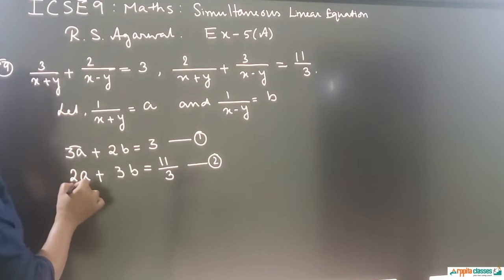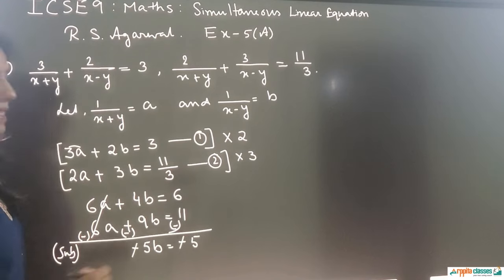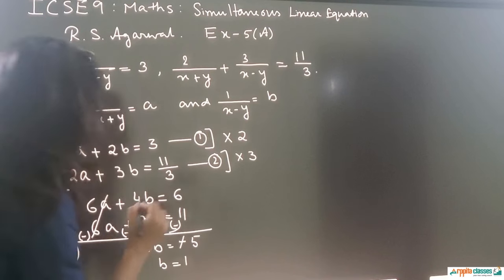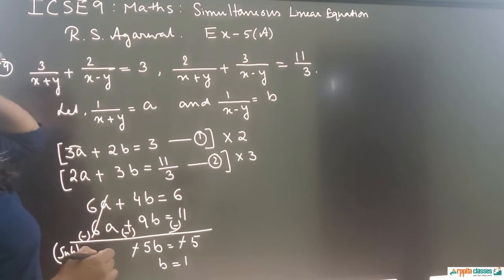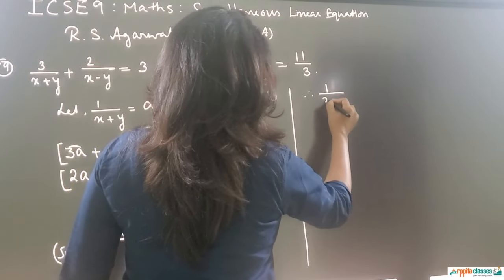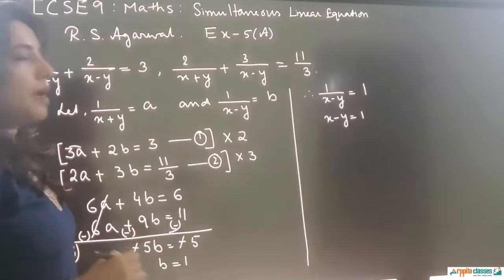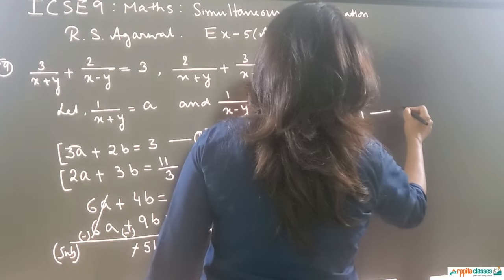Both equations have 6A, so we subtract. Subtracting gives: 4B minus 9B equals 6 minus 11, that is minus 5B equals minus 5. The negatives cancel and we get B equals 1. Since B is 1 upon (x−y), we have 1 upon (x−y) equals 1, so x minus y equals 1. This is equation 3.